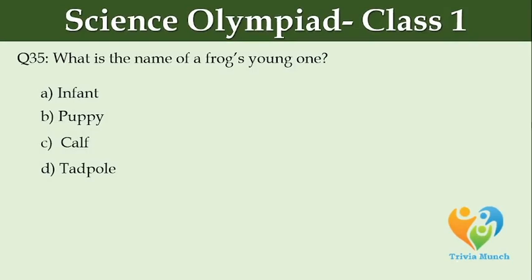What is the name of a frog's young one? Option A: Infant. Option B: Puppy. Option C: Calf. Option D: Tadpole.